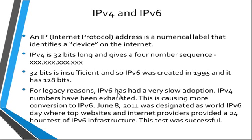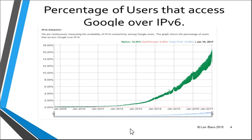More people are converting to IPv6. Google keeps track of the percentage of users that access Google over IPv6. In the first blush this looks like a really growing number, but if you look at the y-axis you see that so far it's up to about 18% to 20%. So it's still not a huge amount in terms of IPv6, assuming that Google is representative of the kind of traffic you have.